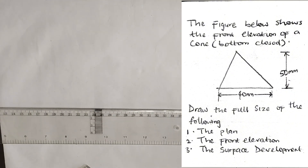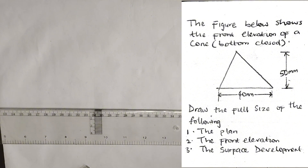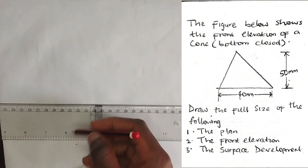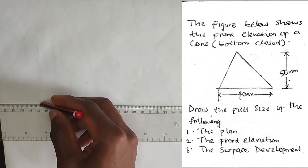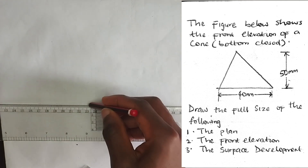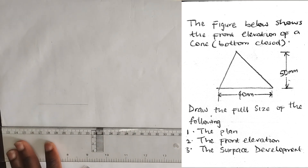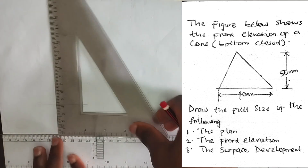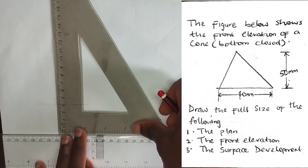The first thing we have to do is draw our plan. According to the question, we have been given the base of the front elevation to be 40 millimeters, so the radius of our plan is going to be 20 millimeters. I'm going to draw a straight horizontal line, then a vertical line.